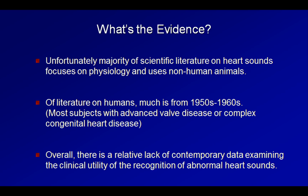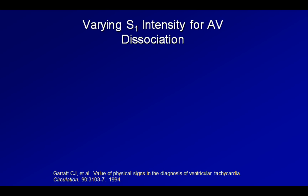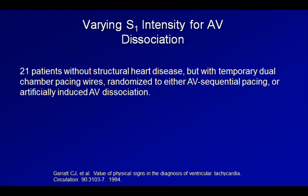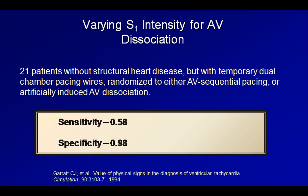The first question I will address is how accurate an S1 of variable intensity is at detecting AV dissociation. This was investigated by one paper back in 1994. The study protocol was a bit complicated, but in summary, 21 patients who lacked significant structural heart disease but who had temporary dual-chamber pacing in the context of an EP procedure were randomized to either having standard AV sequential pacing or having AV dissociation artificially induced. Each was then examined by multiple clinicians for several physical exam findings, including a variable intensity of S1. The authors found a sensitivity of 58% and specificity of 98%, translating to a positive likelihood ratio of 24.4 and a negative likelihood ratio of 0.4. Therefore, the presence of a variable S1 was highly predictive of AV dissociation, and its absence was modestly predictive of the absence of AV dissociation.